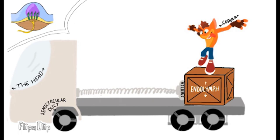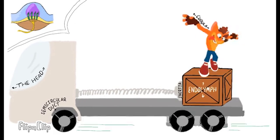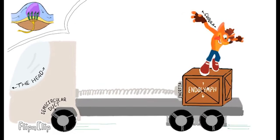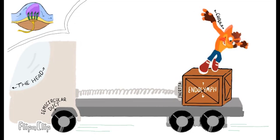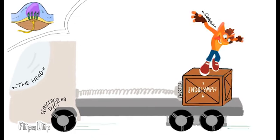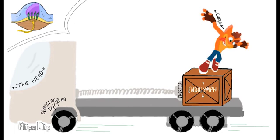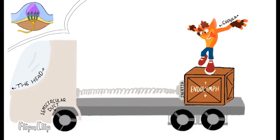Thus, the cupula is displaced or dragged through the endolymph, causing bending of the cilia on the hair cells. Eventually, as rotation continues, the endolymph begins to move.